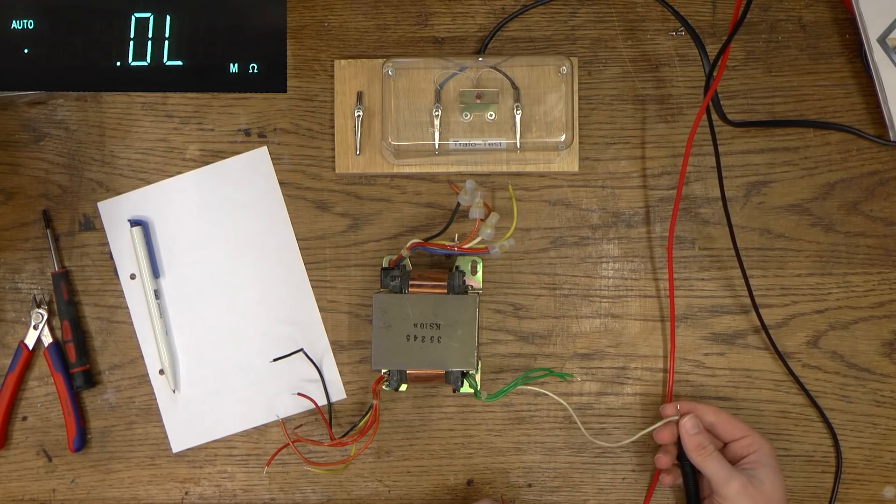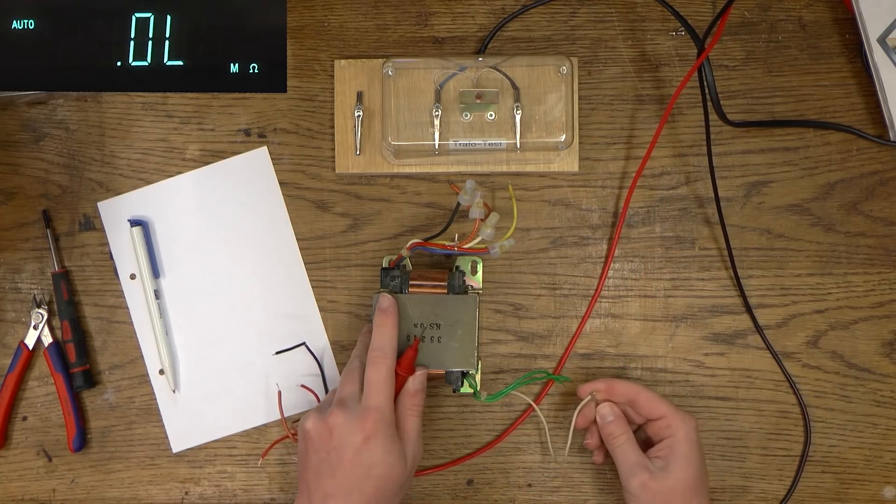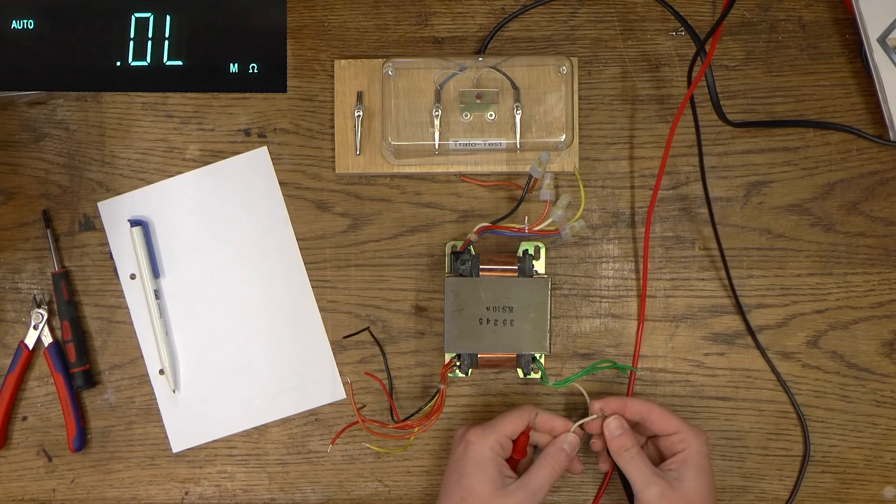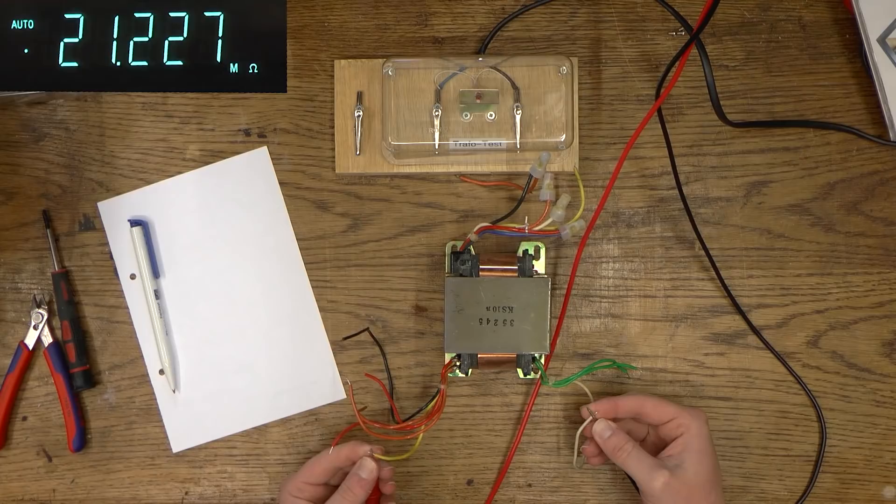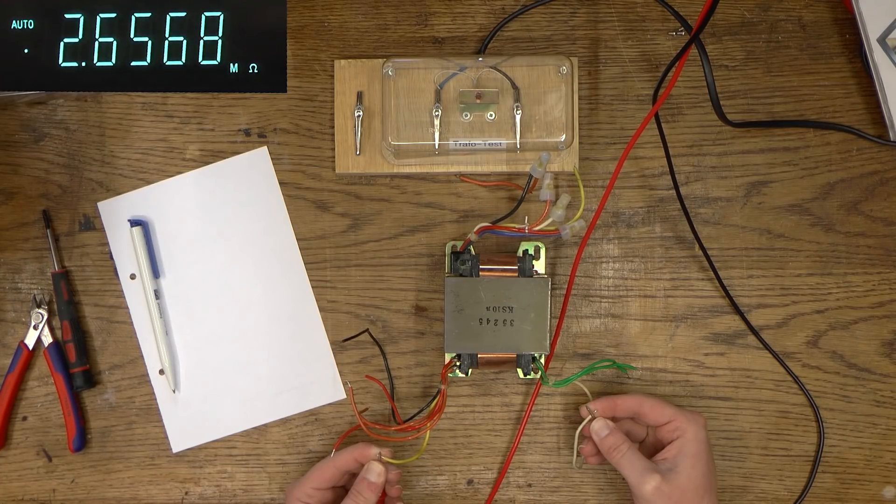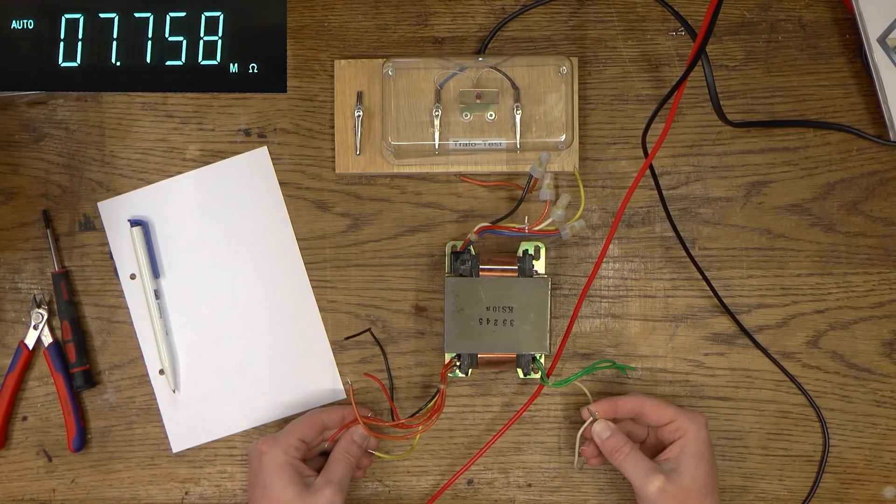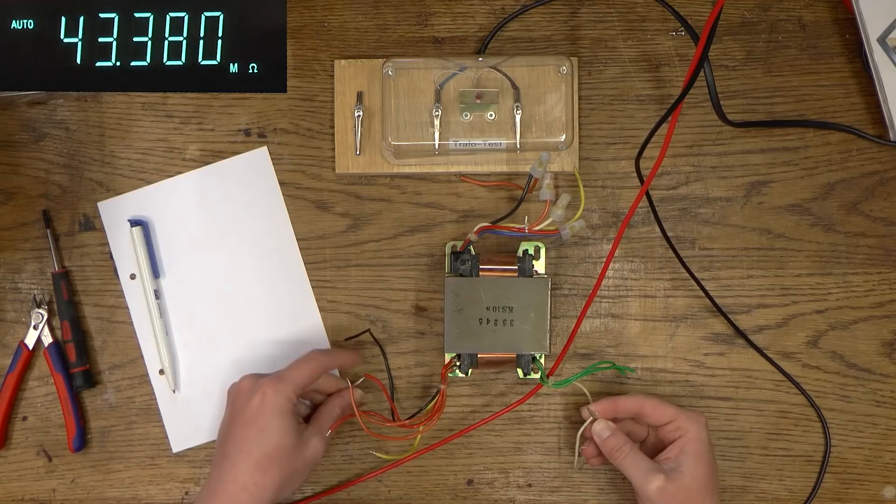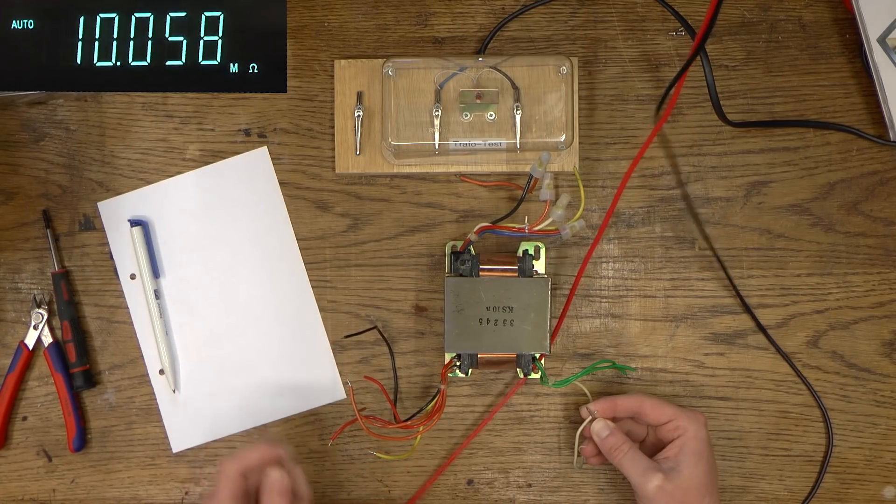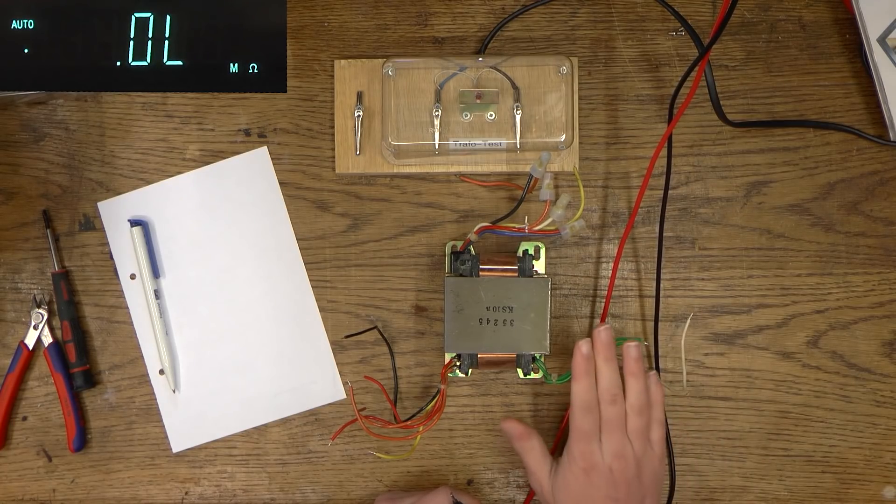So what I'm now going to do is I'm going to make sure that this has no relation to any of the other windings on the other side. So I'm going to keep my probe on the center tap of that winding and I'm going to test all the other windings and we got mega ohms. So that's our first winding. Center tapped winding right there. So that's good.